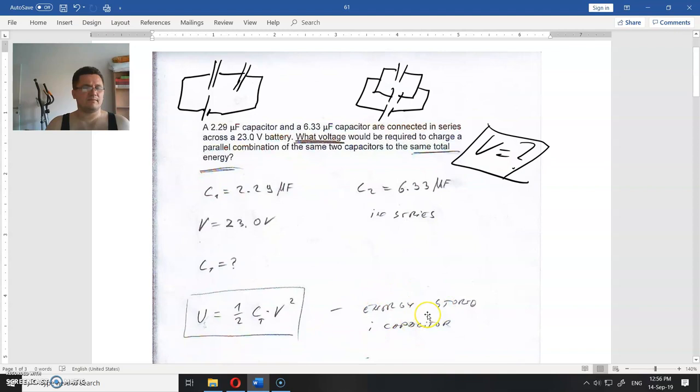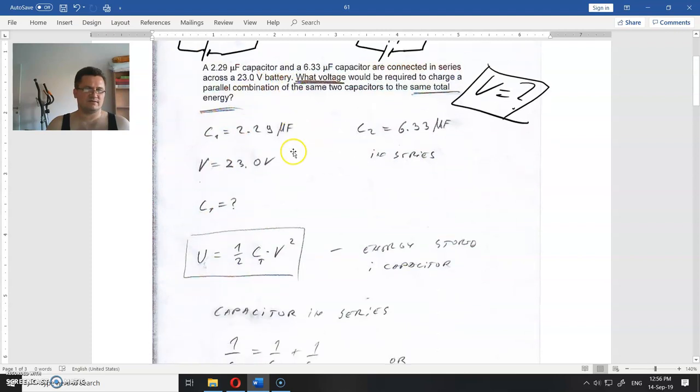This is the energy stored in a capacitor. For any capacitor, the energy is one-half times capacitance times voltage squared. Now, because we have a combination of capacitors, we will find the equivalent capacitance.